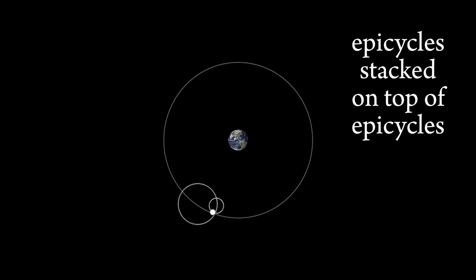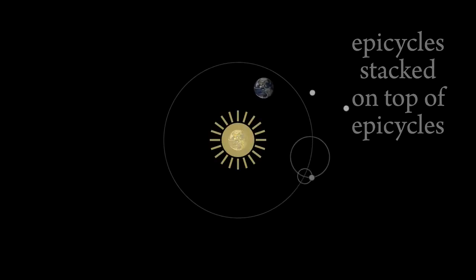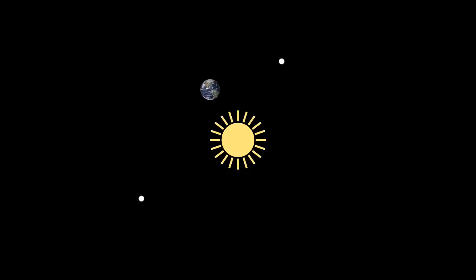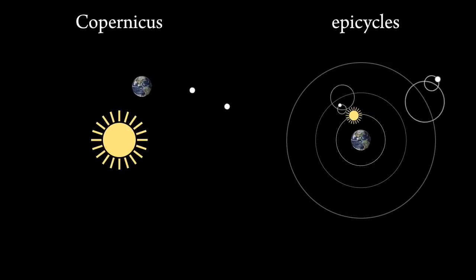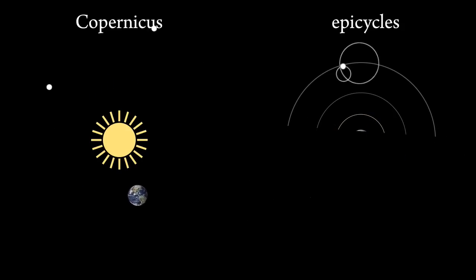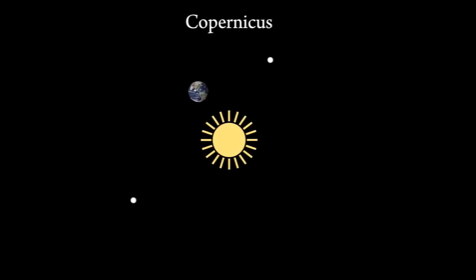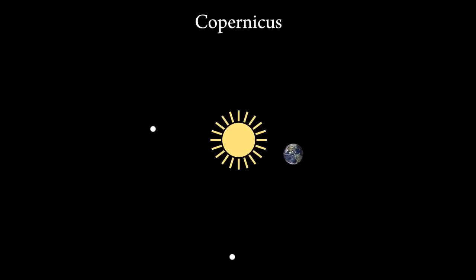But then Copernicus came along and said: what if the planets are just all going around the sun instead? It turned out the epicycles were not needed to account for the same observations. Comparing the two explanations, we can razor away all of the epicycles stacked on top of other epicycles. And of course today we know that Copernicus was right and epicycles don't exist.